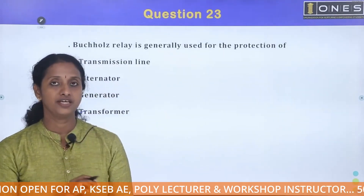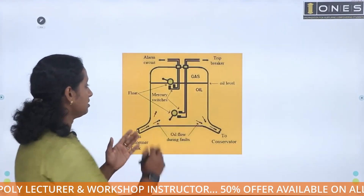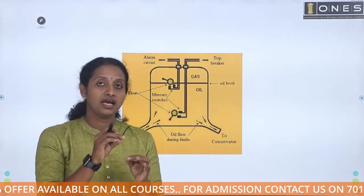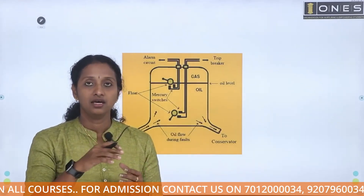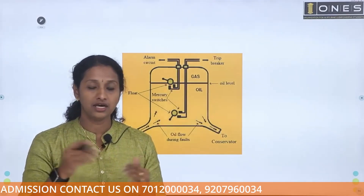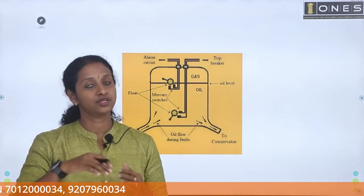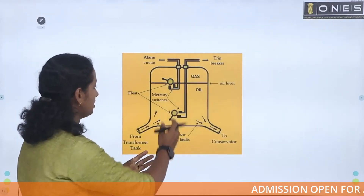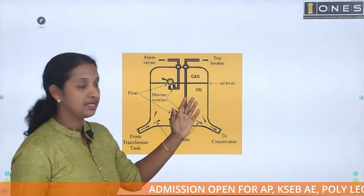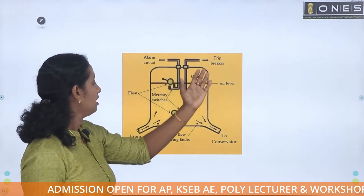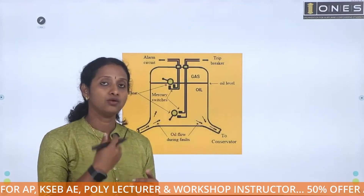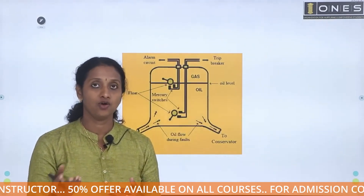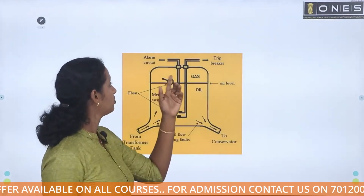Insulation failure in transformers — the oil forms bubbles. If you touch it, you can use the alarm circuit and the trip circuit. If there is no high fault, you can use the insulation failure with the alarm circuit and trip circuit.